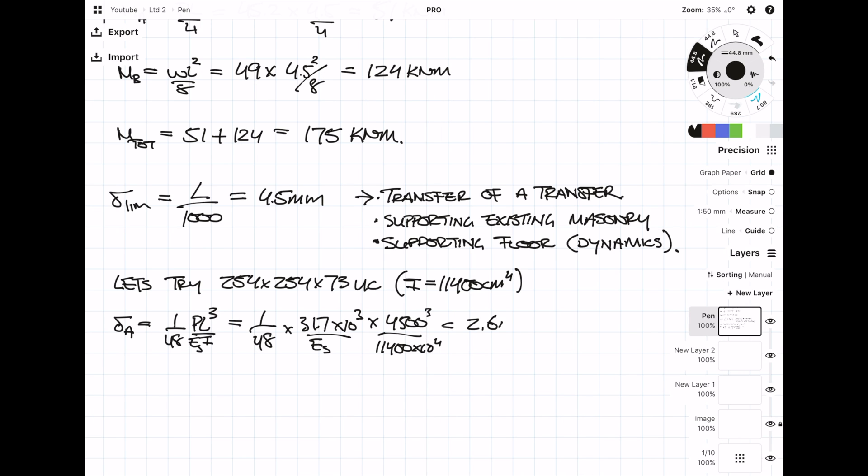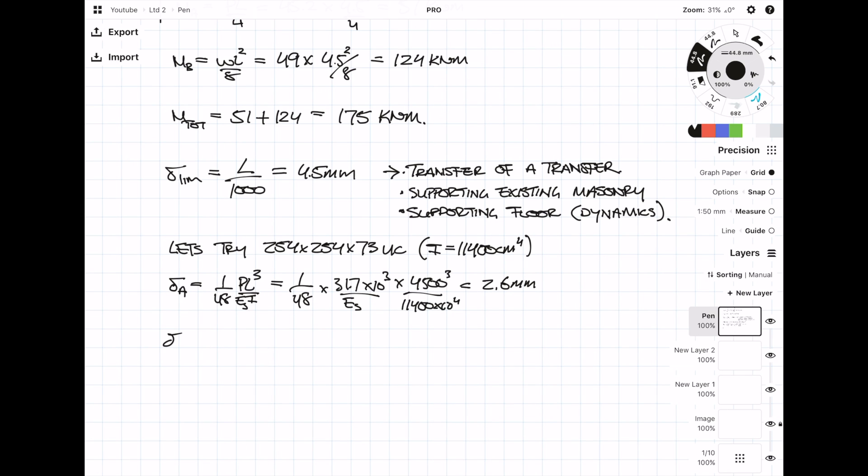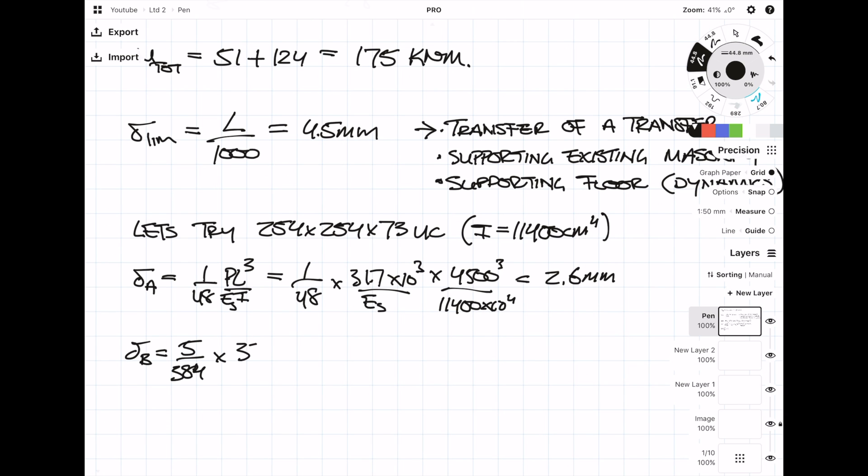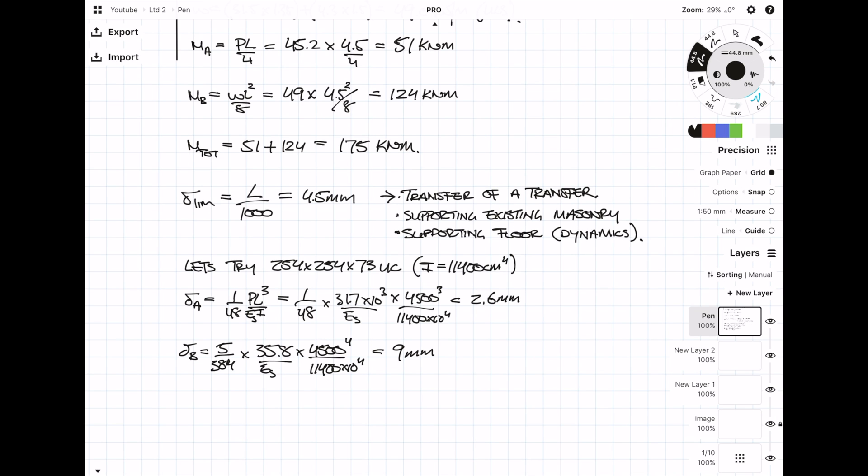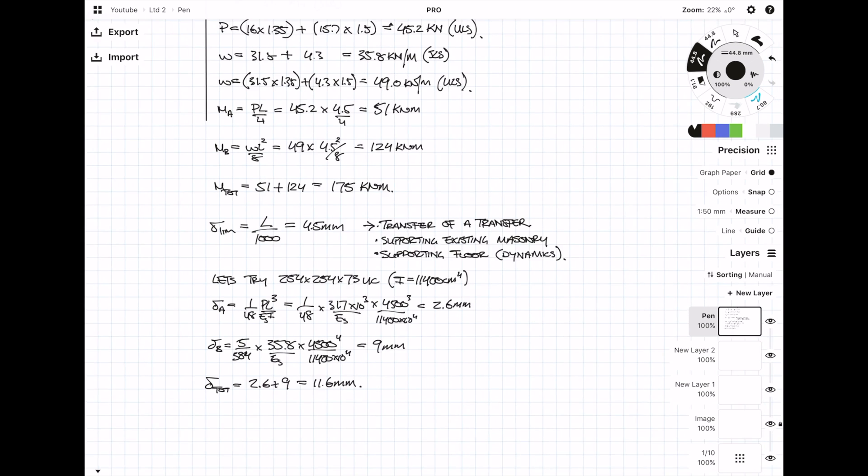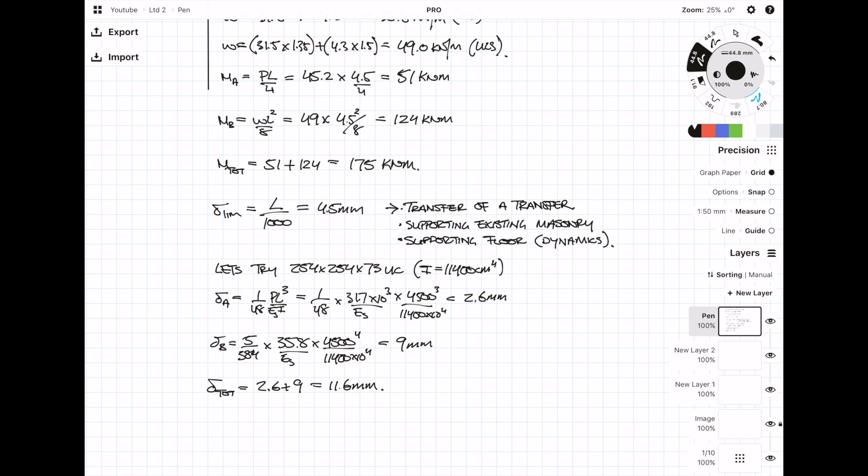I get a deflection value of 2.6 mm. Now I just do the same thing by working out the deflection value for the UDL load, and I get a deflection value of 9 mm. When you add the two deflection values together, you get a combined deflection of 11.6 mm, which is greater than the deflection limit which I had set earlier.